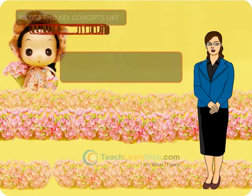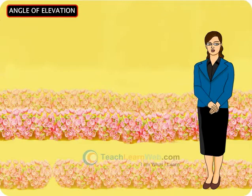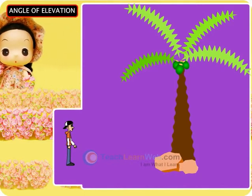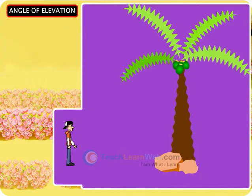Angle of Elevation. Children, assume that there is a coconut on top of the tree. Then, in order to pluck the coconut, you need to raise your head to look at the top of the tree. So,